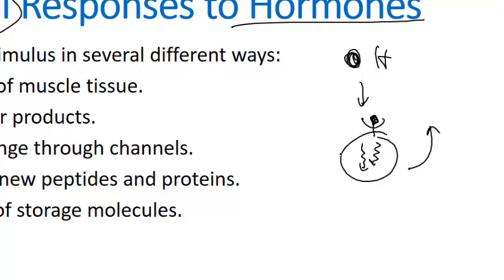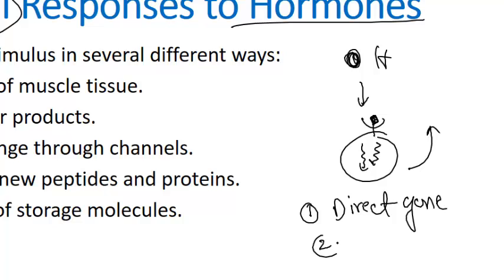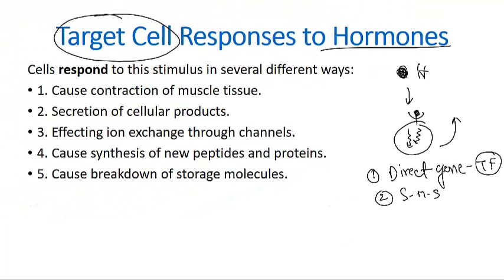This response is generated by two different processes. One is by direct gene activation, where the hormone enters the nucleus and binds with transcription factors that help transcribe specific genes inside the cell. The other is by the second messenger system: hormones bind to the receptor, activate secondary messengers, and those secondary messengers ultimately help produce proteins that assist in gene transcription.